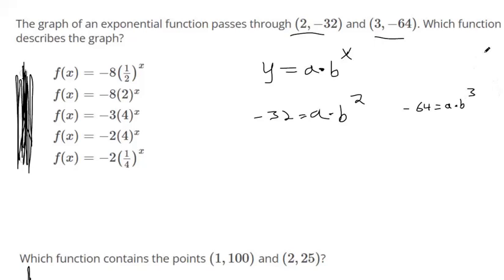And then now we have a system of equations we could use to solve. We could get a by itself really easy in this equation. Just divide b squared from both sides. So you get a is negative 32 divided by b squared. So you can plug that into this equation over here.